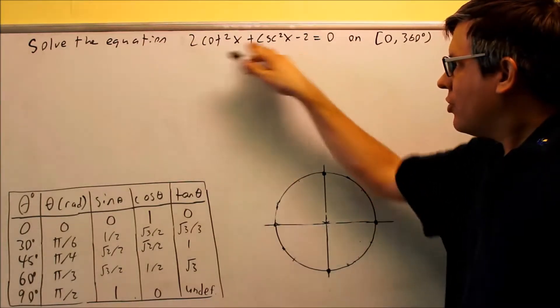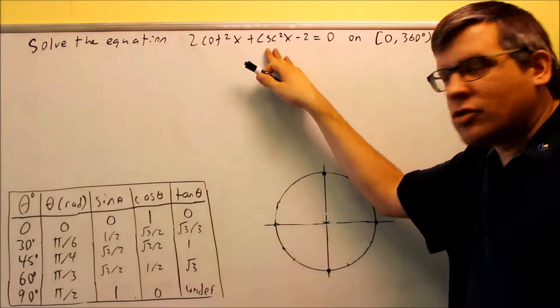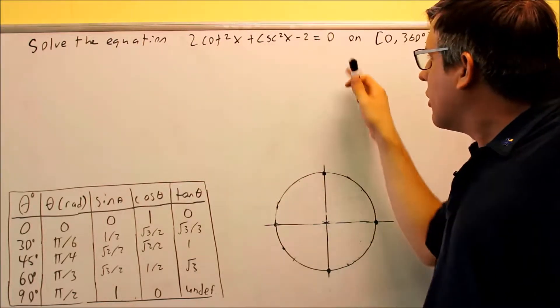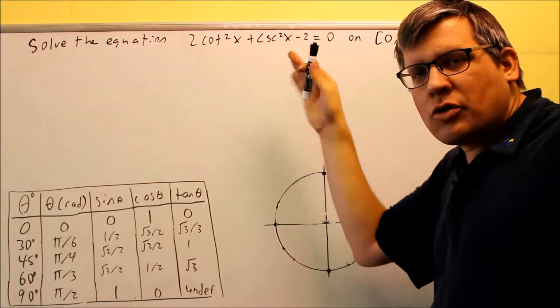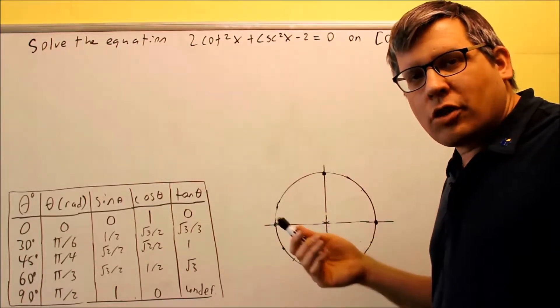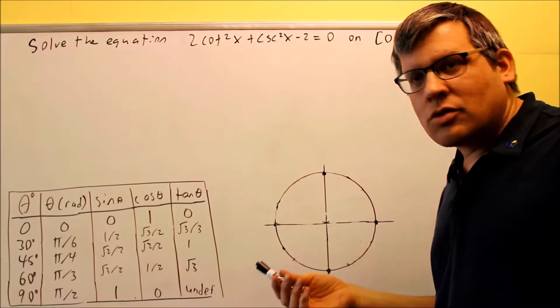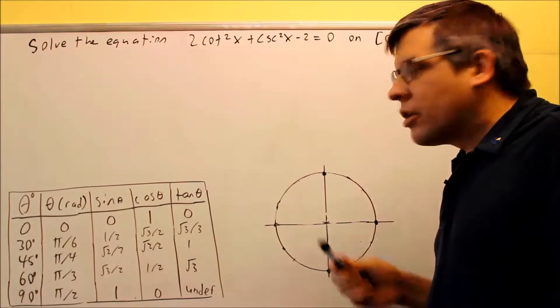Okay, now this one we have two different trig functions, cotangent squared and cosecant squared. So the idea here is we need to get them all in terms of one trig function. We have a choice to either change everything into cotangents or everything into cosecants.